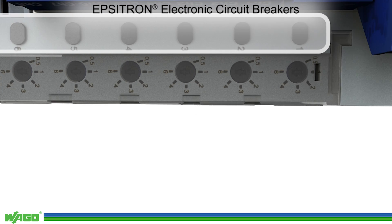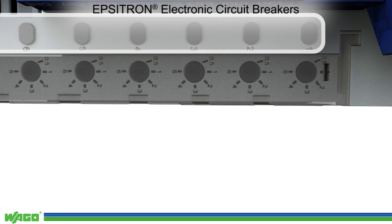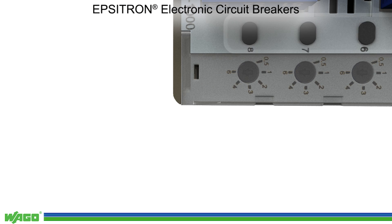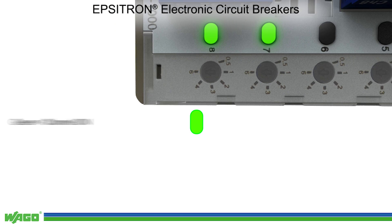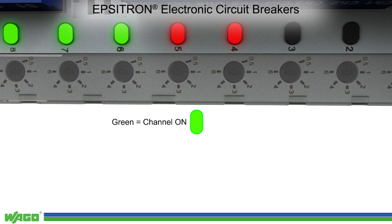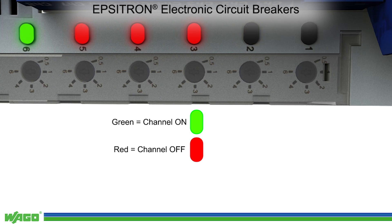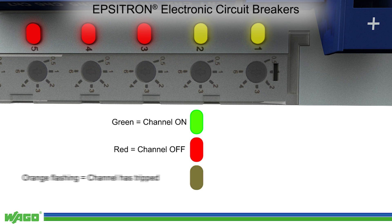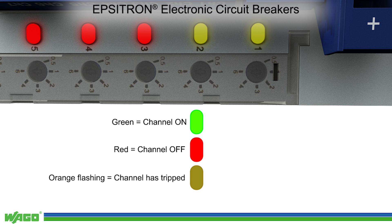Multicolor LEDs indicate the current status of the output channels. The LED lights green when the channel is activated, red when the channel has been manually switched off, and flashes orange when the channel has tripped.